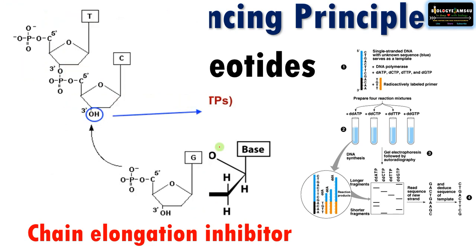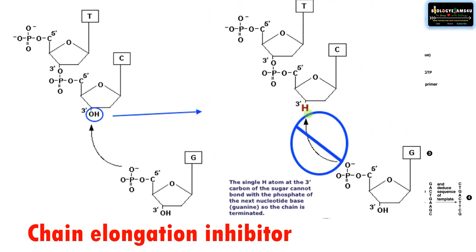As a result of this absence of the OH group, dideoxynucleotides act as chain elongation inhibitors or chain terminators. During elongation, a nucleotide has a free 3' OH group essential for formation of a phosphodiester bond with the incoming nucleotide. In the case of a dideoxynucleotide, at the 3' position there is hydrogen instead of OH, so the incoming nucleotide cannot form a phosphodiester bond and chain termination occurs. That is why this is also called chain termination sequencing.